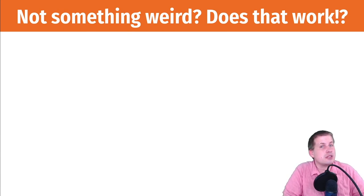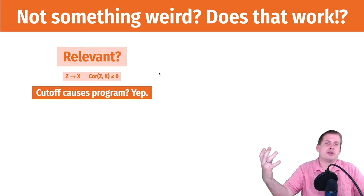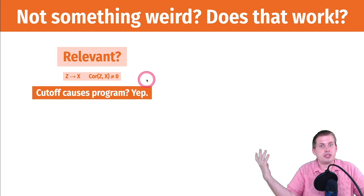But it still works as an instrument. So it is relevant. Being above or below the cutoff causes you to access the program. That is relevant. So here's our instrument Z, that's above or below the cutoff. It causes program use. There's definitely an arrow in that DAG. If you're above the cutoff or below the cutoff in this case, you're going to use the program. So there's a relationship there. It is relevant.